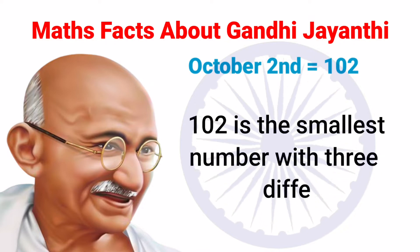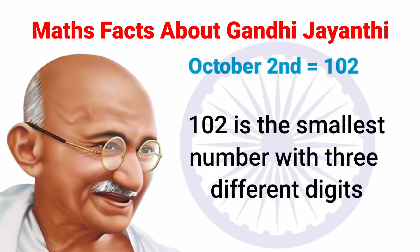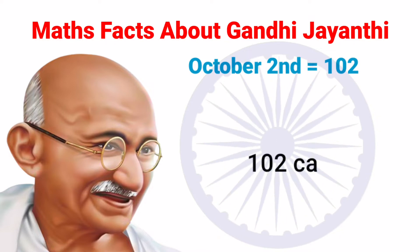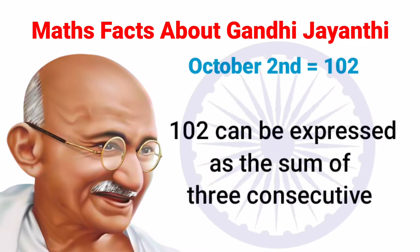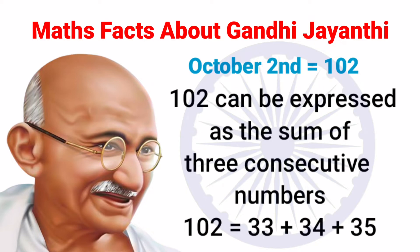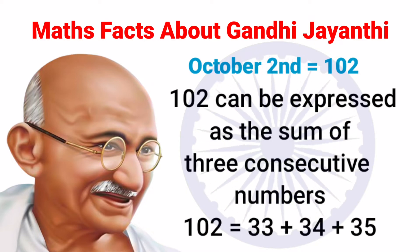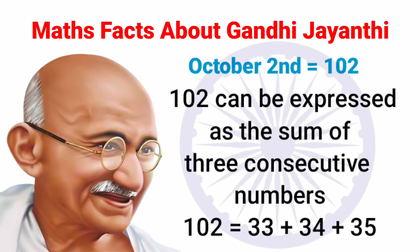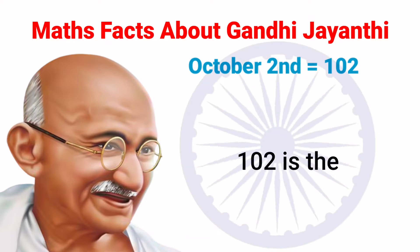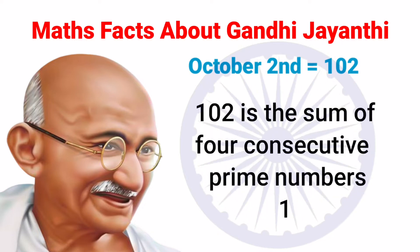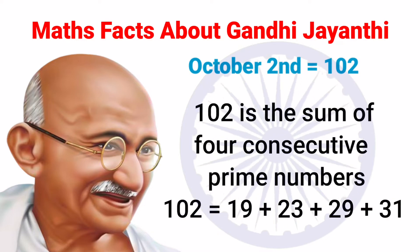102 is the smallest number with three different digits. Next, 102 can be expressed as the sum of three consecutive numbers: they are 33, 34, and 35.